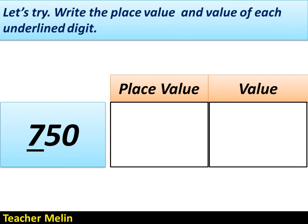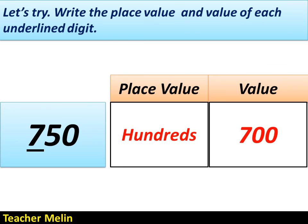Let's try this number: 750. The underlined digit is 7. What is the place value of 7? The correct answer is hundreds. And what is the value of 7? The correct answer is 700.